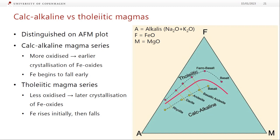To distinguish calc-alkaline from tholeiitic magmas, we use an AFM plot. A is alkalis — sodium plus potassium — F is iron, and M is MgO. In the calc-alkaline series, the magmas are more oxidized because of fluids coming off the slab. Even from basalt, we're crystallizing iron-titanium oxides, and iron is dropping as magnesium drops and alkalis increase with differentiation. For a tholeiitic magma series, we're not as oxidized, so we don't start off crystallizing iron-titanium oxides. We begin moving away from magnesium by crystallizing olivine and clinopyroxene, and the iron actually goes up to a peak, at which point the iron-titanium oxides start to crystallize and then it drops. This is the fundamental distinction between tholeiitic and calc-alkaline series.